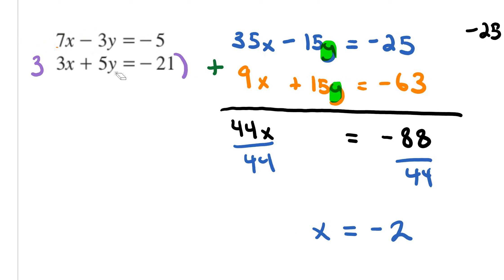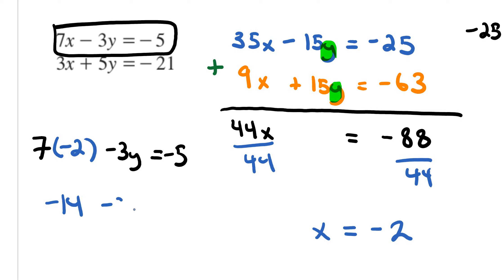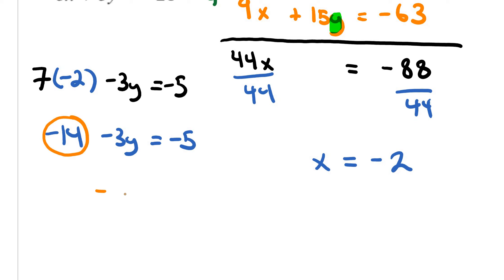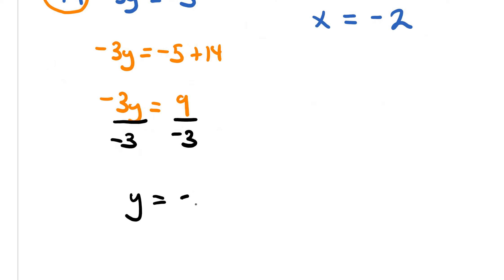Finally, to finish this off, go back to the first equation: 7 times x — and x has a value of negative 2 — minus 3y equals negative 5. That's going to be negative 14 minus 3y equals negative 5. Now solving for y: bring the negative 14 over, so negative 5 plus 14 is positive 9. So negative 3y equals 9. Divide both sides by negative 3, and y equals negative 3. So my final answer is negative 2 comma negative 3. That concludes this homework video guide.